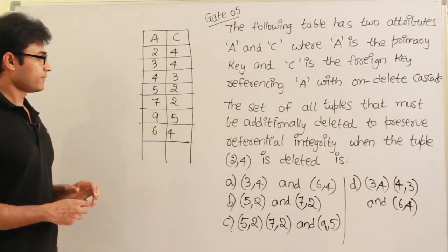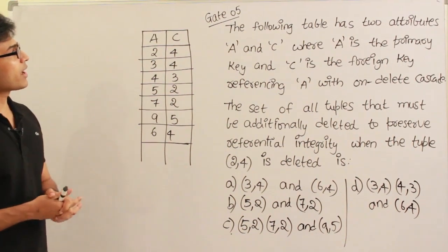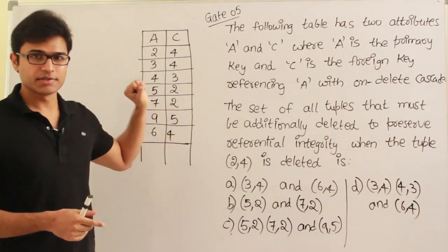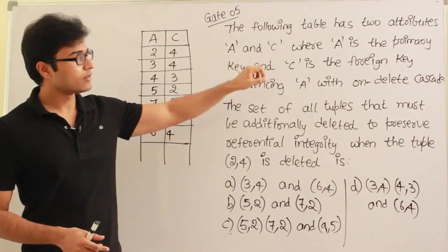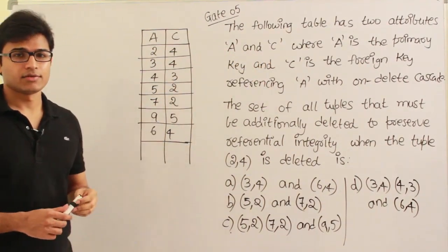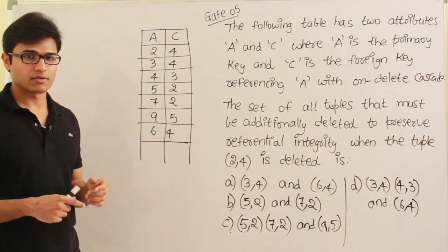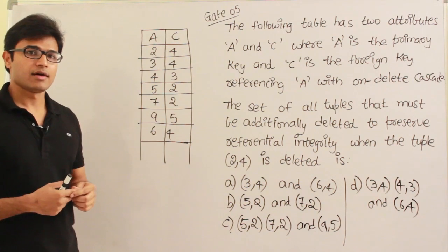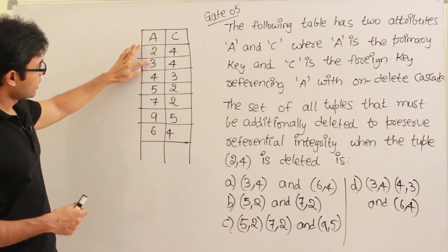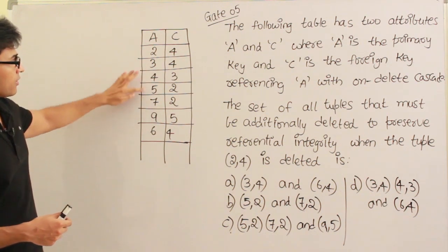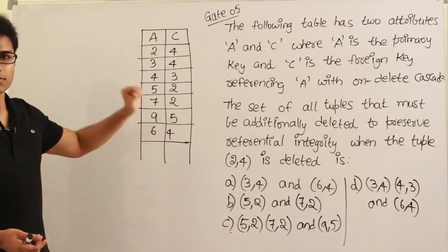This question is from GATE 2005. A table is given with two attributes A and C, where A is the primary key. We know that primary key values should not be repeated and should not be null. If you look at it, the values are not repeated anywhere and it cannot be null — therefore A is the primary key.